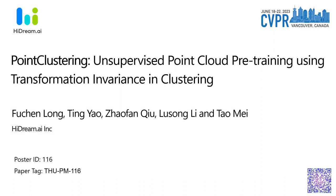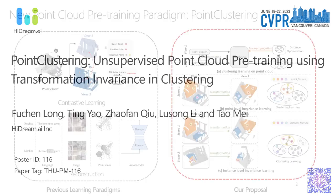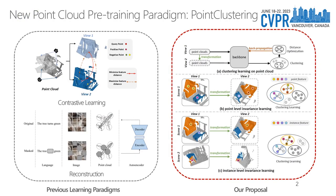Hi everyone, I'm Fuchan Long from HiGene.ai. I'm glad to introduce our work, Point Classroom: Unsupervised Point Cloud Pre-Training Using Transformation Invariance in Classroom. Previous unsupervised point cloud pre-training can be grouped into two dimensions: contrastive learning and reconstruction. We leverage clustering to learn point features, iteratively optimizing feature clusters and backbone under feature invariance at two levels — the point level and the instance level. Our proposal is architecture-agnostic and readily applicable to different point cloud backbones.